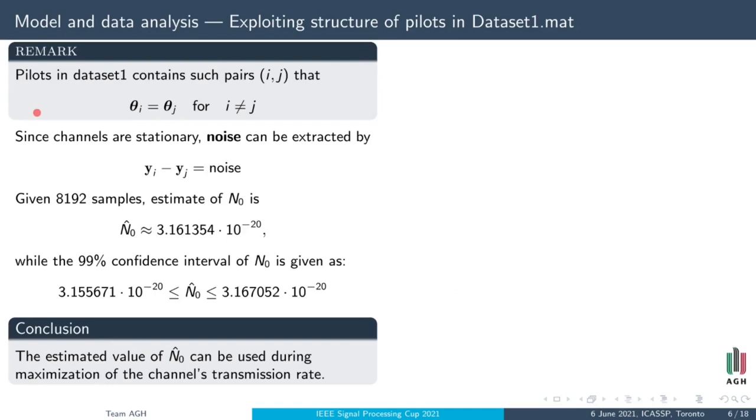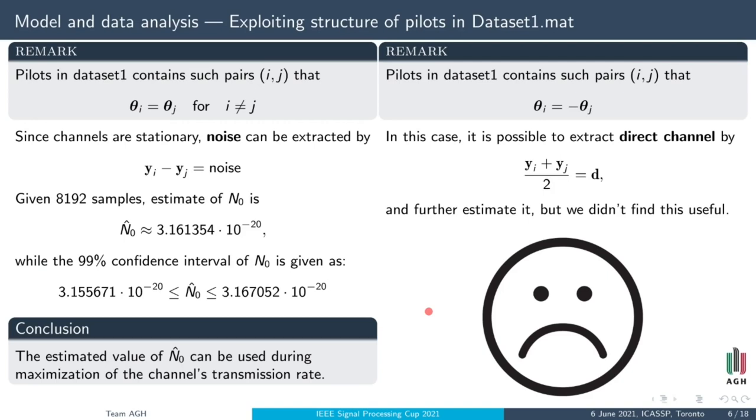Next, we have found that every configuration appears twice in dataset 1. From that, we can estimate noise because the only difference between received signals for the same configurations is noise. So estimated value of the noise is following and we use it during rate maximization. What is more, every configuration has its pair of inverted configuration. From that, direct path can be estimated, but we didn't find it useful.